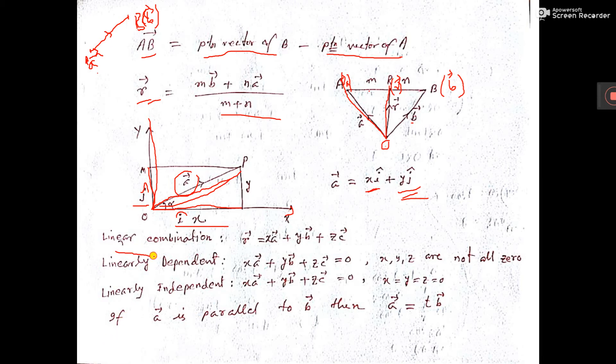Now, linear combination of vector. R vector we can write x a plus y b plus z c, where a, b, c are the vectors and x, y, z are the scalars. So, any vector R we can write in this way.